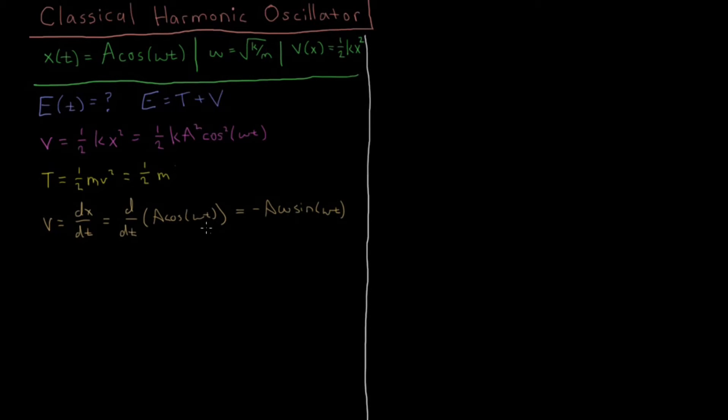So that's what v is going to equal. So then v² is the square of this, which is going to be A²ω² sin²(ωt).